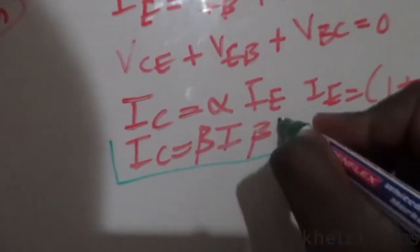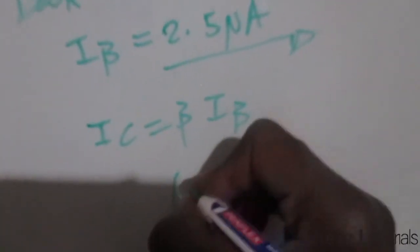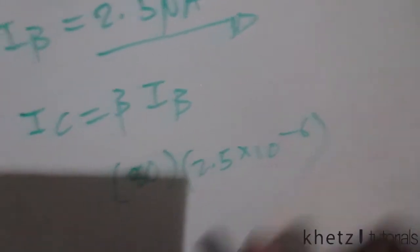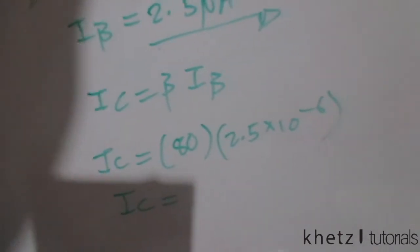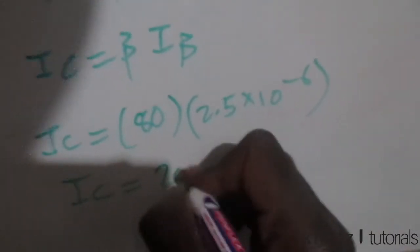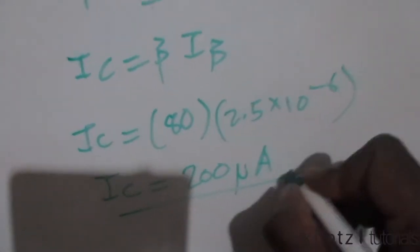Now let's use Iβ to find everything else. We have the equation Ic equals beta multiplied by Iβ. Beta is given as 80 and Iβ is 2.5 microamperes, so Ic equals 80 times 2.5 microamperes, which gives us Ic equals 200 microamperes.